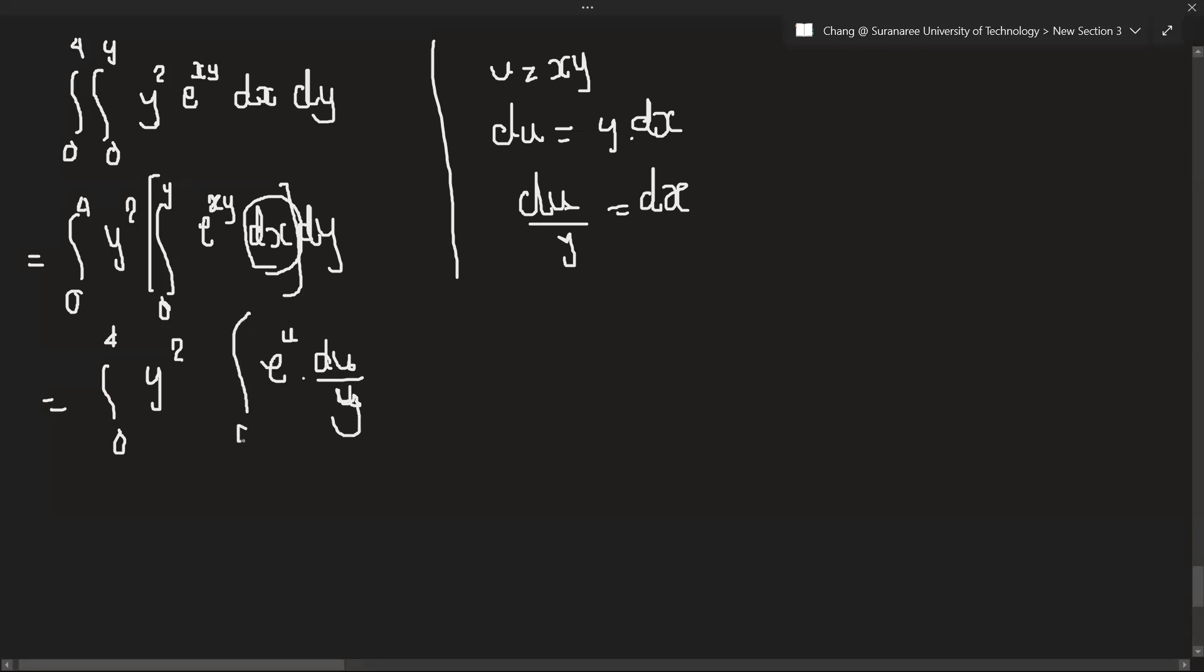And the interval is from 0 to 1, and we have to integrate this with respect to u again. So let's take this y out, treating it as constant here. So 0 to 4, y squared over y. When we integrate u, we will get e^u evaluated from 0 to y times dy.